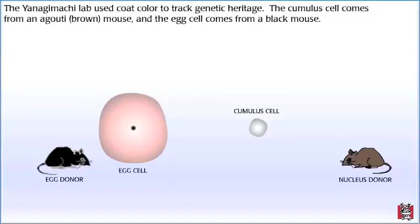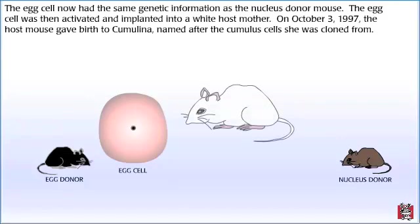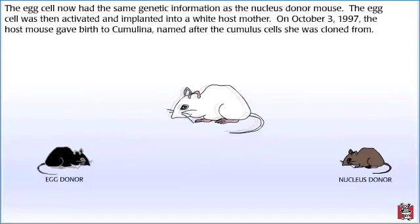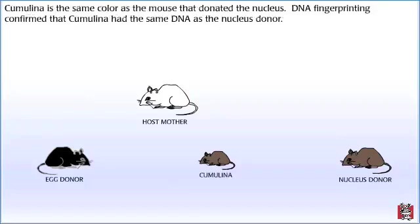The Yanagamachi lab used coat color to track genetic heritage. The cumulus cell came from an agouti, or brown, mouse, and the egg cell came from a black mouse. The egg cell now had the same genetic information as the nucleus donor mouse. The egg cell was then activated and implanted into a white host mother. On October 3, 1997, the host mouse gave birth to Cumulina, named after the cumulus cells she was cloned from. Cumulina is the same color as the mouse that donated the nucleus, and DNA fingerprinting confirmed she had the same DNA as the nucleus donor.